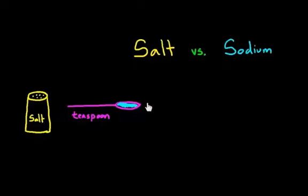I would find that one teaspoon of salt weighs about six grams. Let me write that here. So it's about six grams, and six grams is the same as 6,000 milligrams. So that's the weight of one teaspoon of salt.